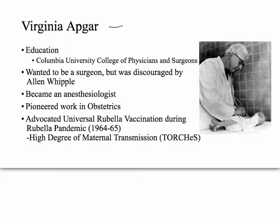Virginia Apgar graduated from Columbia around the 1930s and won several awards. She wanted to be a surgeon, but was discouraged by Alan Whipple — basically being told it's a man's world. She was a feminist at heart, though she never joined any women's organization, and was commonly quoted as saying something like 'women are free from the womb.' She became an anesthesiologist because she was essentially excluded from surgery.